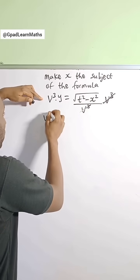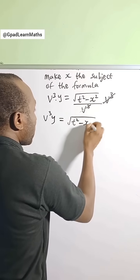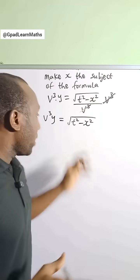What do you observe? It's gone. So that leaves you with v cubed y is equal to the square root of t squared minus x squared.